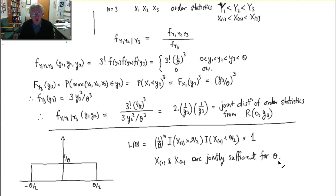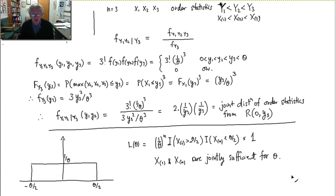And that completes that problem. Now go on and think about question 3, and think very carefully about the role that theta plays for each of the three distributions there. Those three cases have been chosen to show an evolution in the way the parameter affects the distribution.